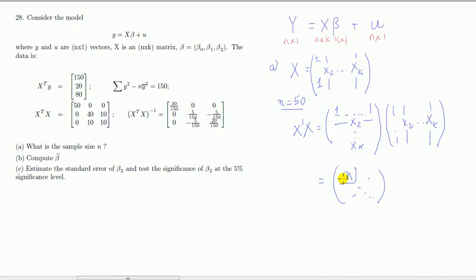Now part B: compute the least squares estimator beta hat. We're looking for three numbers here; it's a vector. It doesn't ask us to prove it, so we can just state it. The least squares estimator for linear regression is given by this formula, which you just have to memorize. We've already been given the quantities, so we just have to multiply the things together.